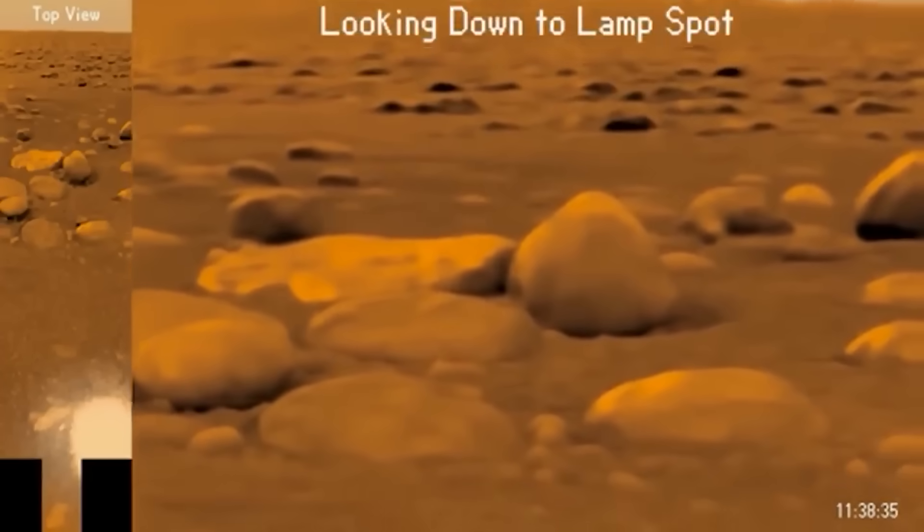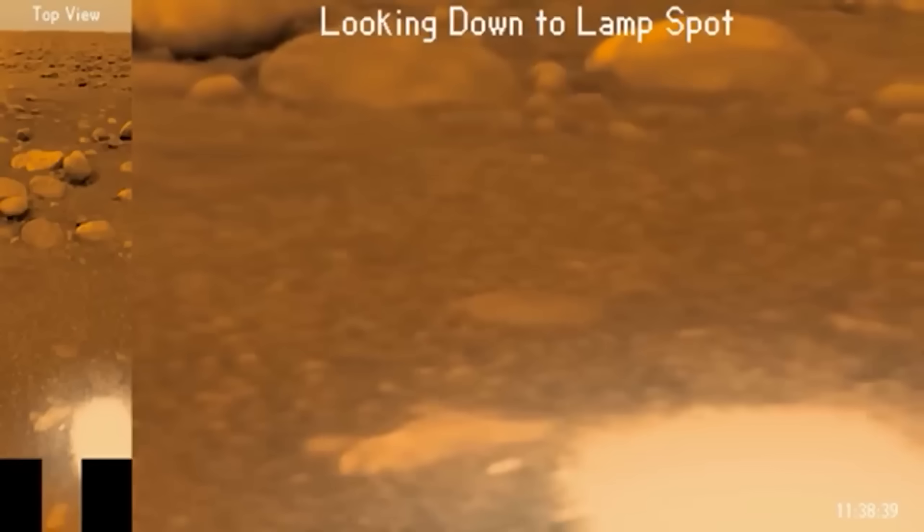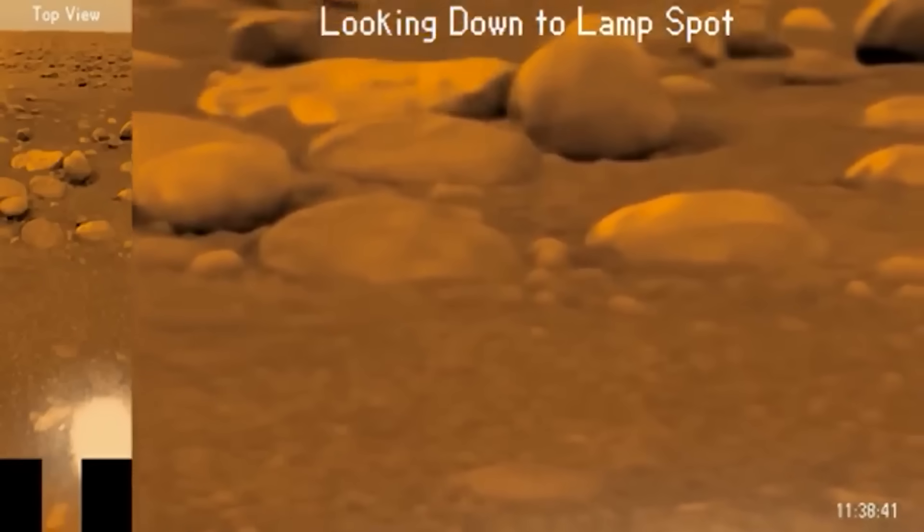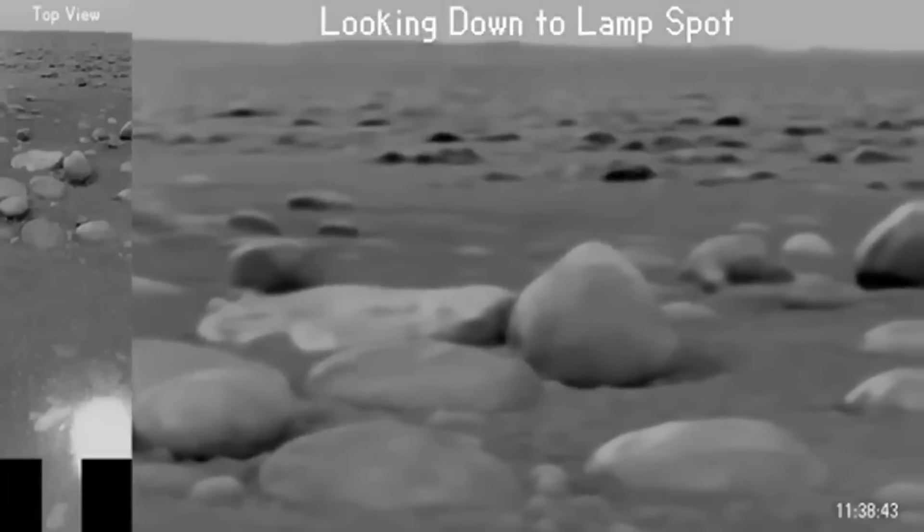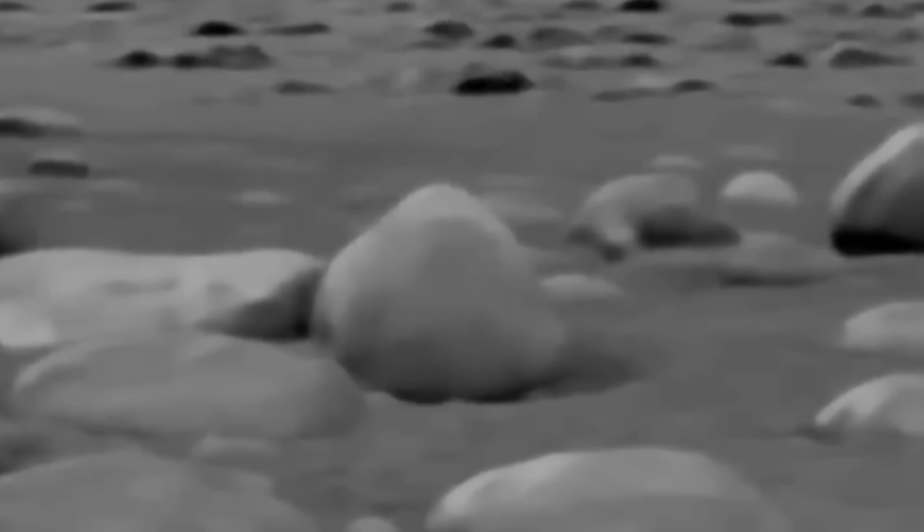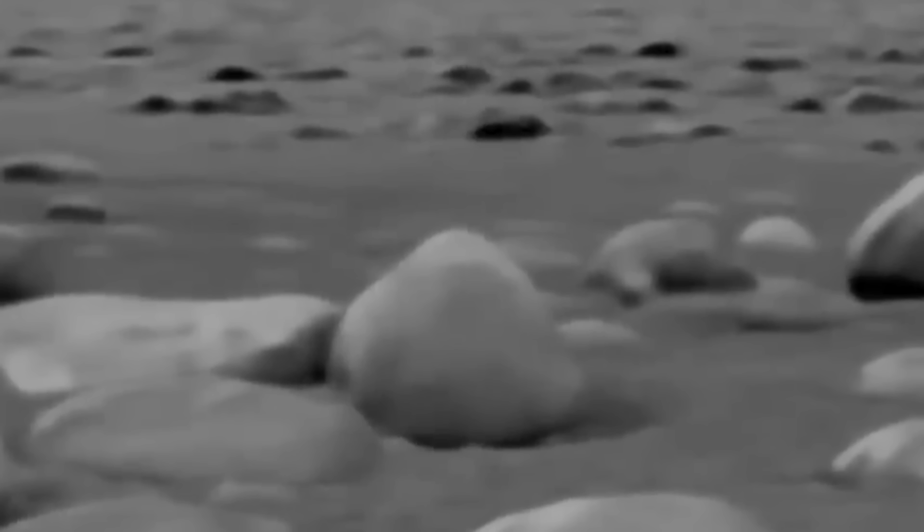As the camera begins to look around on the surface, the most striking revelation is not how alien the world looks, but actually how familiar this all seems. If you take away the orange color, it looks like the bottom of any river on earth. We see large rounded stones that have been smoothed over by flowing liquid, and they're surrounded by smaller pebbles on what looks like a sandy surface.